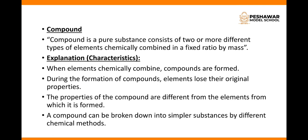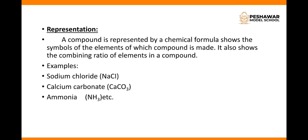When elements chemically combine, compounds are formed. During the formation of a compound, elements lose their original properties. This point is to be remembered: elements lose their original properties whenever formation of compounds occurs. The properties of a compound are different from the elements from which it is formed. A compound can be broken down into simpler substances by different chemical methods.